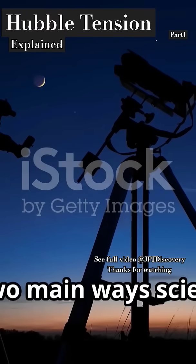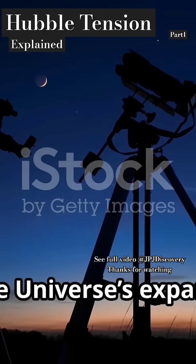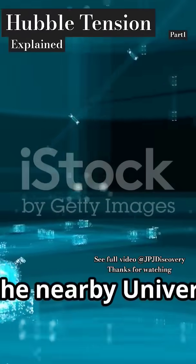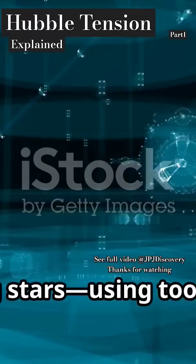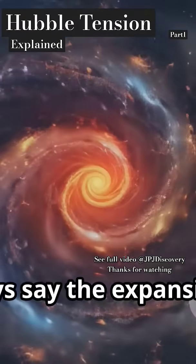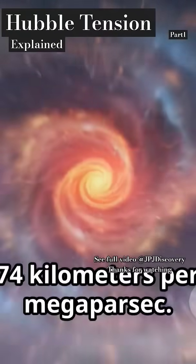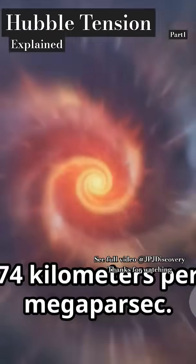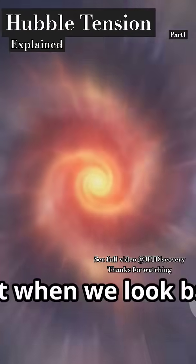There are two main ways scientists try to pin down the universe's expansion speed. First, they look at the nearby universe, galaxies, exploding stars, using tools like the Hubble Space Telescope and ESA's Gaia. These guys say the expansion rate is about 73 or 74 kilometers per second per megaparsec. That's science speak for really, really fast.